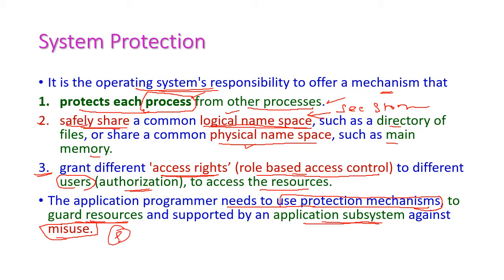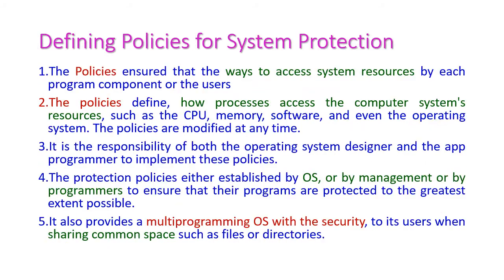These are actually the goals of protection — we have to protect each and every process, memory, and other resources from malicious users. Another important topic is defining policies for system protection. The first policy should ensure the ways to access the system resources by the process or by the user, defining in what way system resources should be accessed.